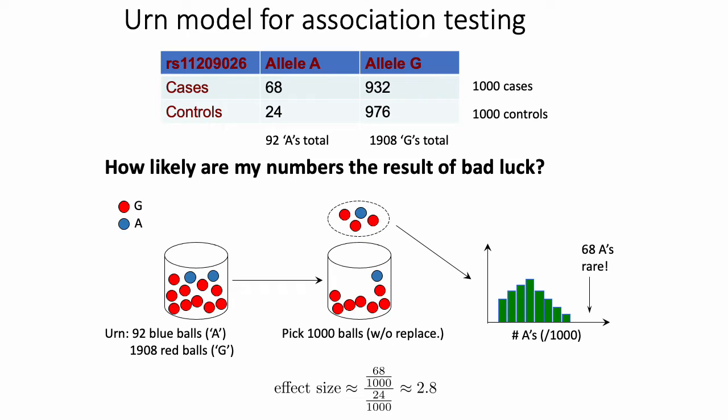The p-value is calculated based on simulations where you're drawing random groups of a thousand individuals and asking how many times you saw an A. That's a distinct concept from effect size, where effect size asks: what is the relative proportion of people with the allele in the cases versus controls? That's really just 68 over 24, so that effect size is approximately 2.8.